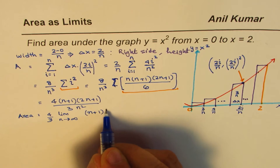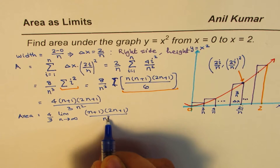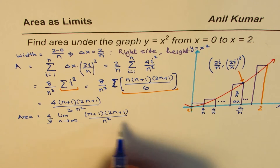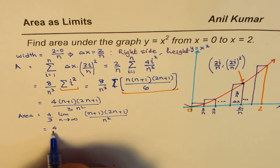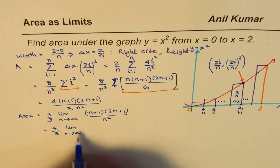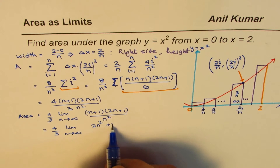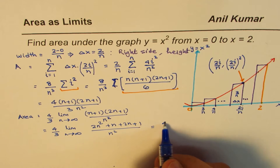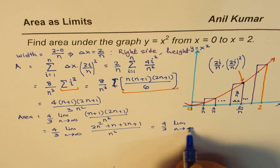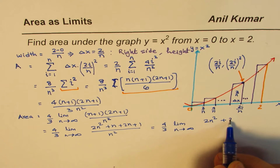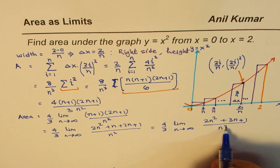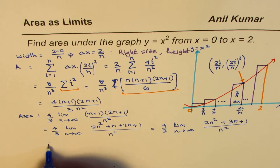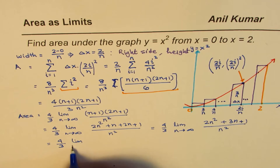We expand the numerator: (n+1)(2n+1) = 2n² + n + 2n + 1 = 2n² + 3n + 1. So the area equals (4/3) × lim(n→∞) of (2n² + 3n + 1)/n². Dividing each term by n², this becomes (4/3) × lim(n→∞) of (2 + 3/n + 1/n²).